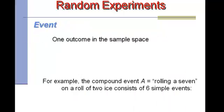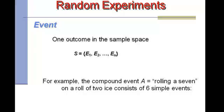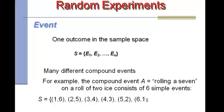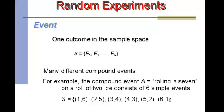An event is another word to get familiar with — it just means an outcome in the sample space. When rolling two dice, we can talk about a compound event. For example, rolling a 7 on two dice could happen 6 different ways: 1 and 6, 2 and 5, 3 and 4, 4 and 3, 5 and 2, or 6 and 1. There are 6 different ways to roll a 7 with two dice, so the probability of rolling a 7 is 6 out of 36.